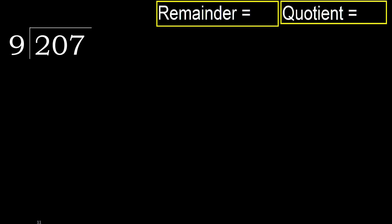207 divided by 9. 2 is less, therefore next. 20. 20 is not less, therefore we work with 20.